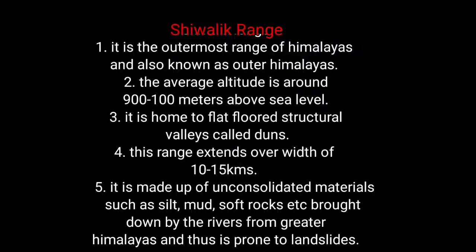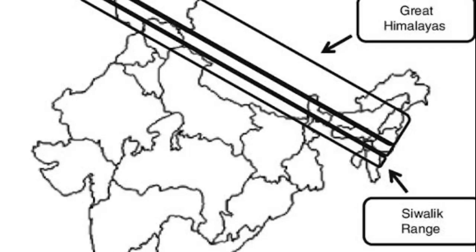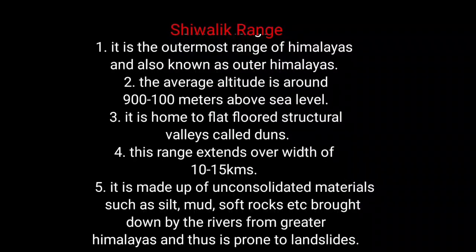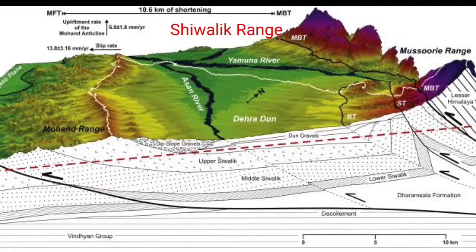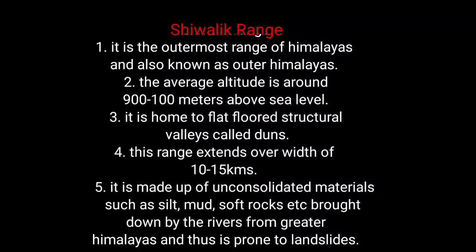The outermost range of the Himalayas, lying to the south, is the Shivalik range. The average height of this range is nearly 1000 meters. An interesting feature found here is the long longitudinal valley known as Dun, with the famous example being Dehradun. This mountain range is made up of loose and unconsolidated materials, which makes it most prone and vulnerable to earthquakes and landslides.